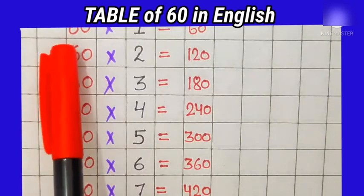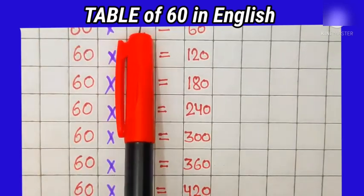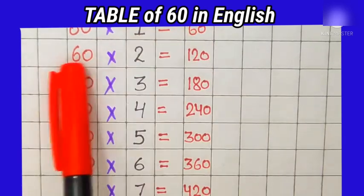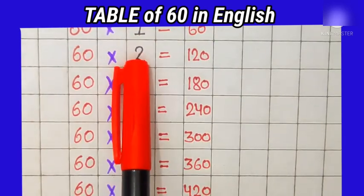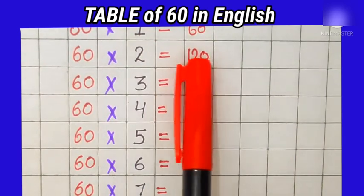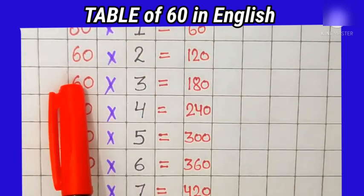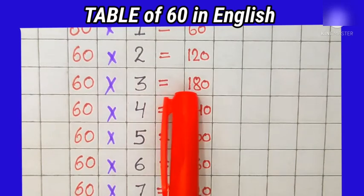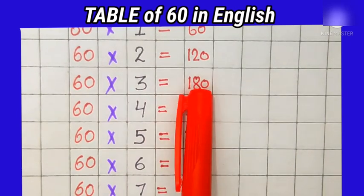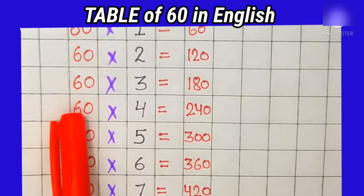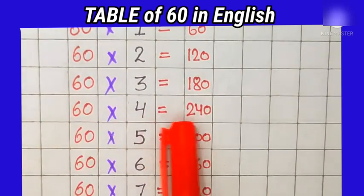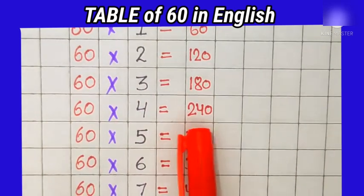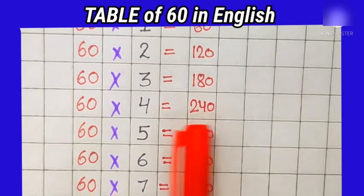61's are 60, 62's are 120, 63's are 180, 64's are 240.